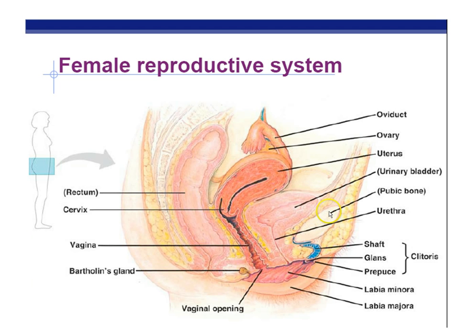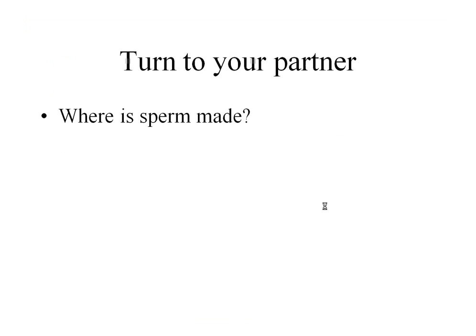The female reproductive system will be covered in Part 2. This ends Part 1 of your notes on Chapter 46, Animal Reproduction.